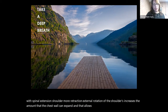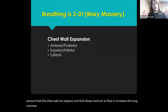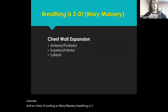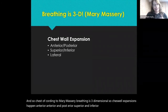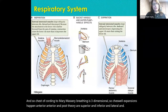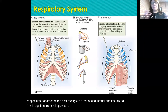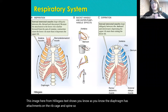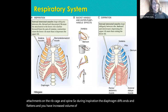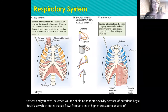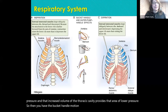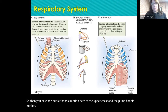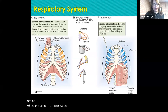Do you feel the expansion you can get? Positioning with spinal extension, shoulder retraction, and external rotation of the shoulders increases the amount the chest wall can expand, allowing more air to flow in and increasing lung volumes. According to Mary Massery, breathing is three-dimensional — chest wall expansion happens anterior and posterior, superior and inferior, and lateral. The diaphragm has attachments on the rib cage and spine; during inspiration it descends and flattens, increasing thoracic cavity volume, following Boyle's Law.